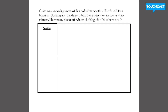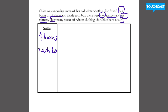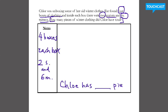All right, next problem. Chloe was unboxing some of her old winter clothes. She found four boxes of clothing, and inside each box were two scarves and six mittens. How many pieces of winter clothing does Chloe have in total? So as I take notes, let's go ahead and look. She has four boxes of clothing. And in each box, she has two S — two scarves — and six M — mittens. And the question asks how many pieces of winter clothing did Chloe have in total? Chloe has blank pieces of clothing in all.